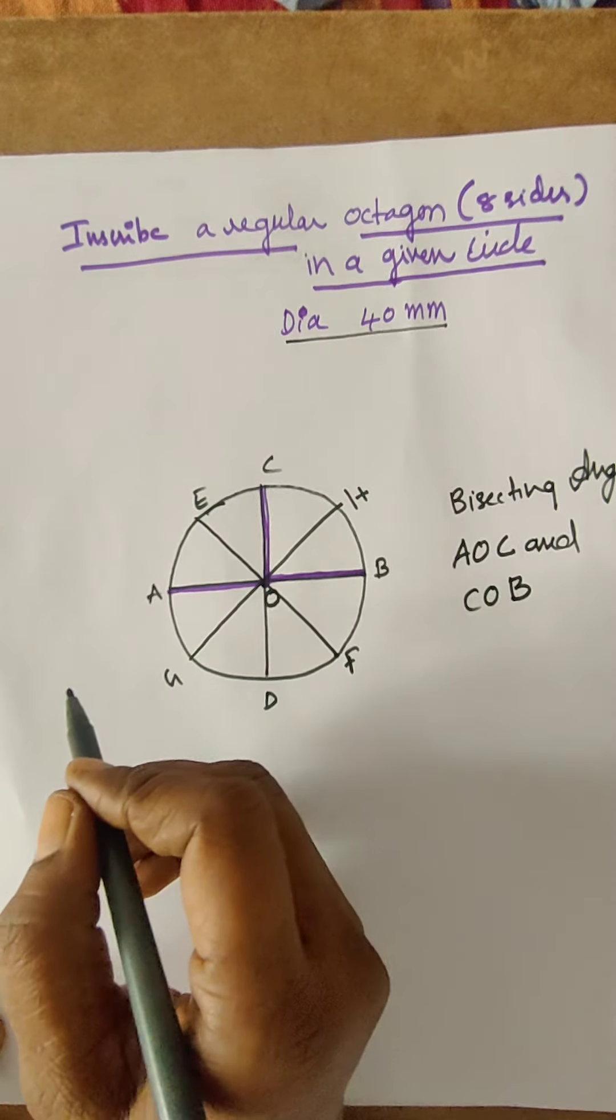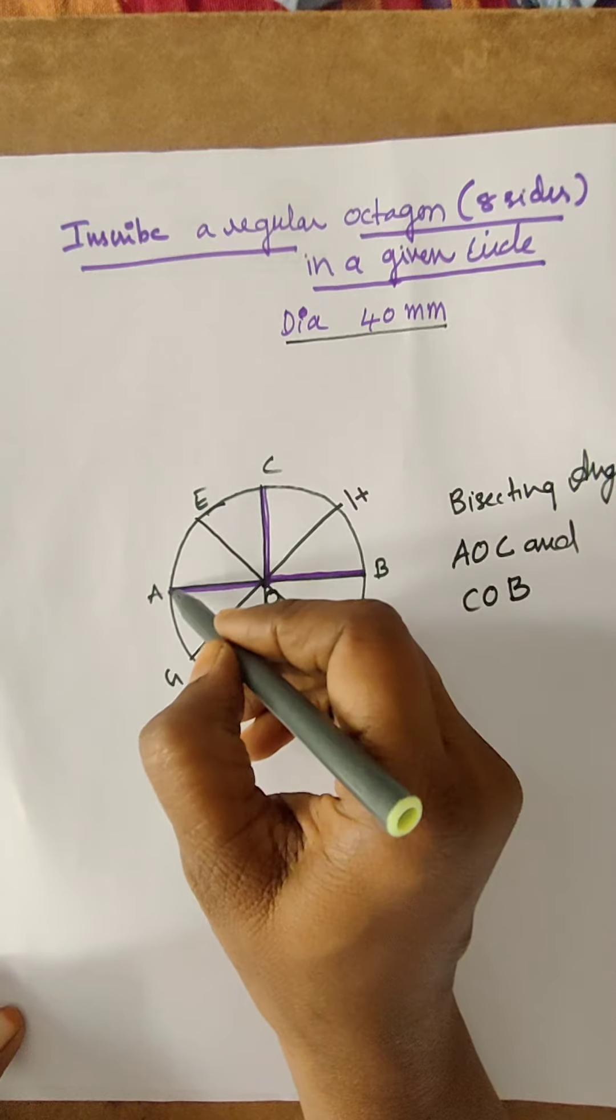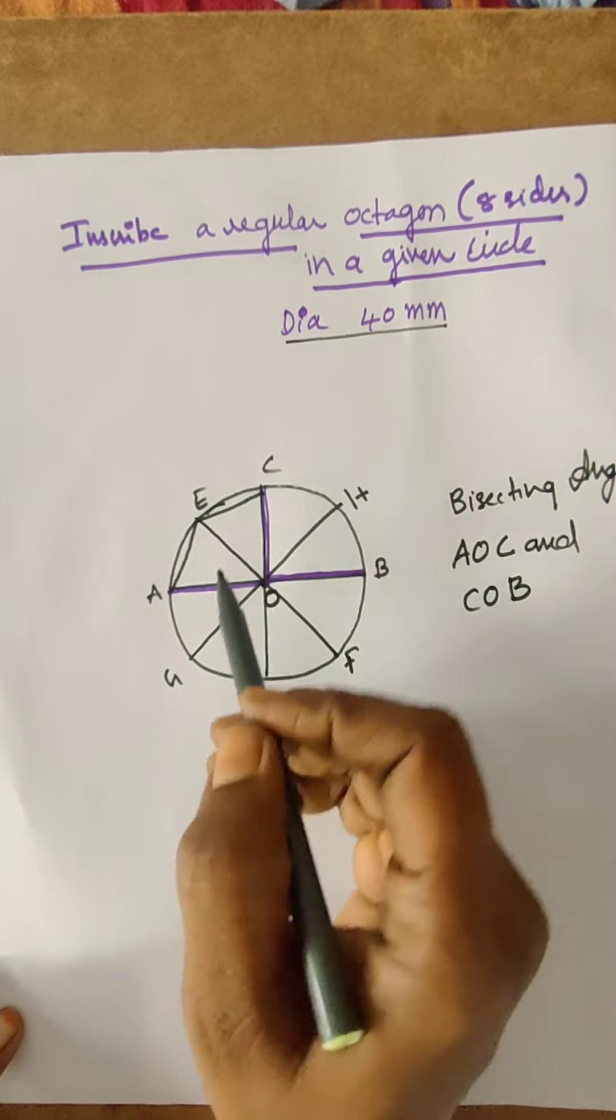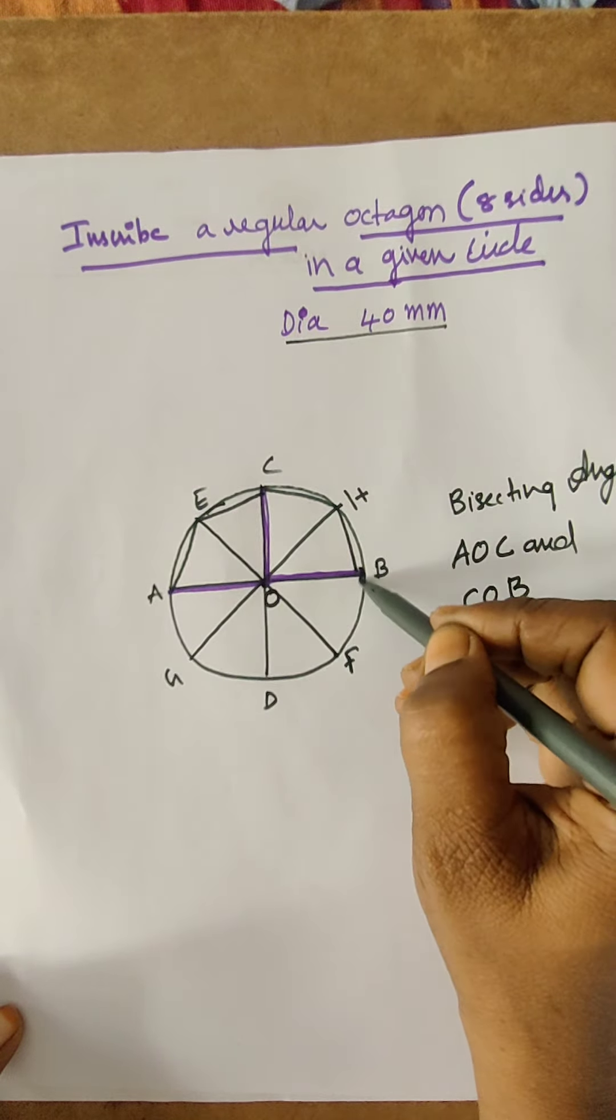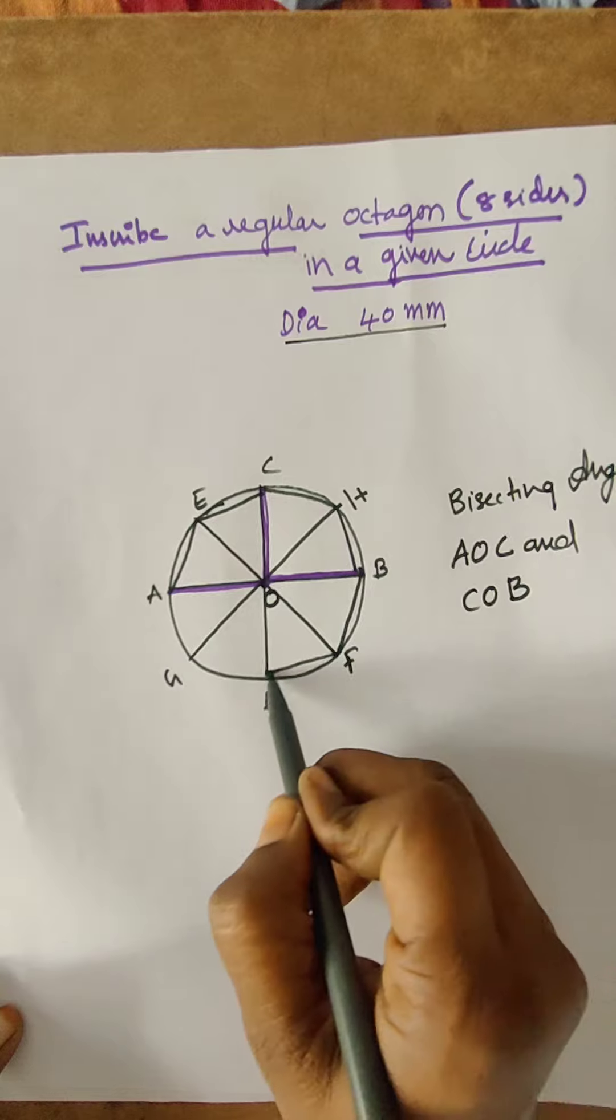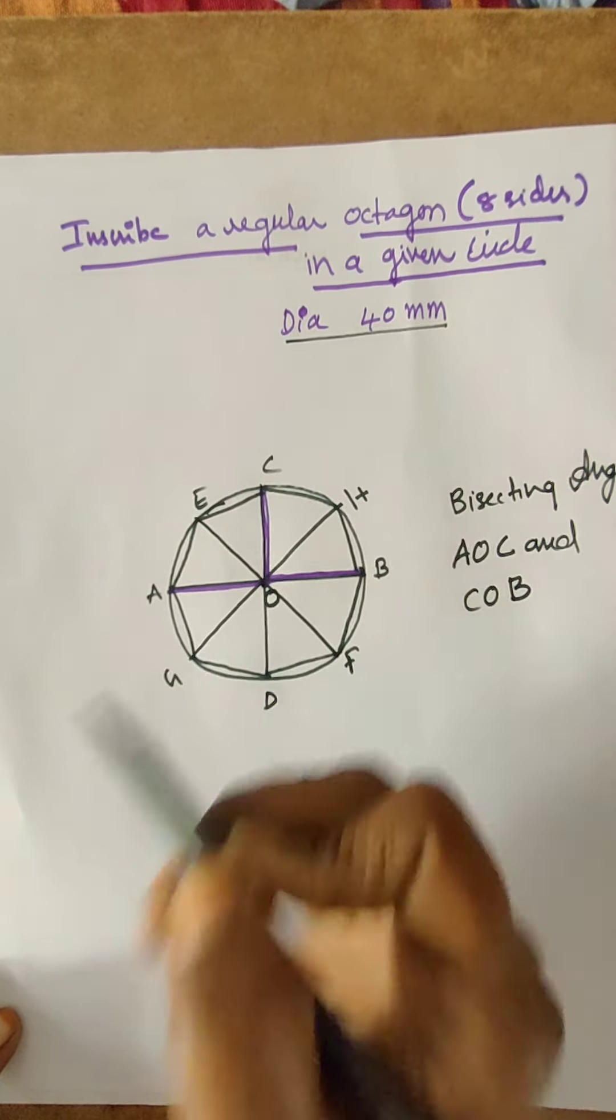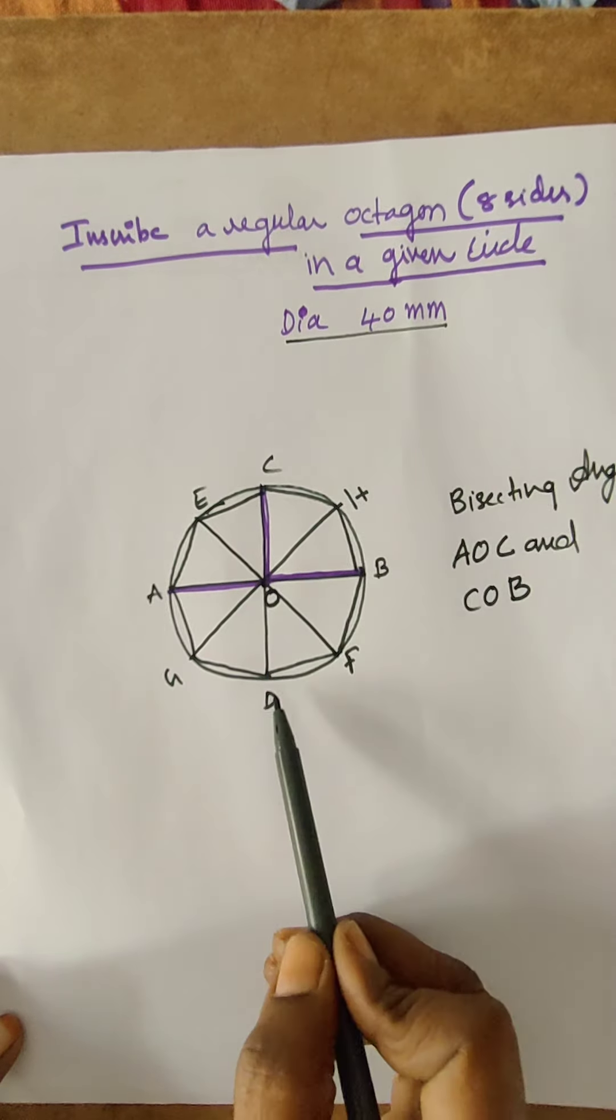Next, we can draw immediately. Join A with E, E with C, C with H, H with B, B with F, F with D, D with Z and A with G, and thus completing the octagon having each side.